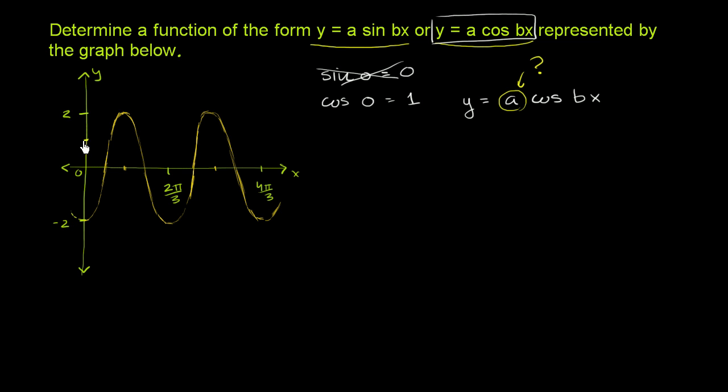It looks like you took a cosine function, and at least when x is equal to 0, we multiplied it by negative 2. So this should be negative 2. So now we have a little bit more filled in of what we actually have. We know that it's y is equal to negative 2 cosine of bx.